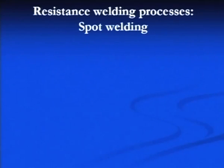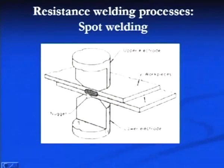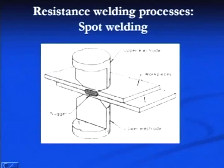Now we will see the resistance welding processes, of which there are many. The first is spot welding. In spot welding, the joint is produced in the form of spots. Two electrodes are used and electric current is passed through the plates to be joined. By electrical resistance heating, heat is generated. The amount of heat generated depends on I²RT, where I is the current flow in amperes.